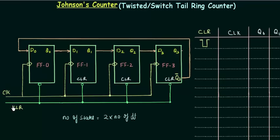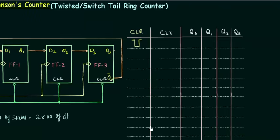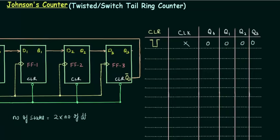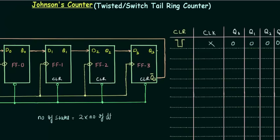This is a very important point for Johnson's counter, because initially when the overriding input is low, the outputs Q0, Q1, Q2, and Q3 are all low — regardless of the clock value. Whereas in the ring counter, Q0 was 1 because the overriding input was connected to the preset. In Johnson's counter there is no initialization required — it will start counting even if we do not initialize it by setting any output to 1. So this is another advantage of Johnson's counter.